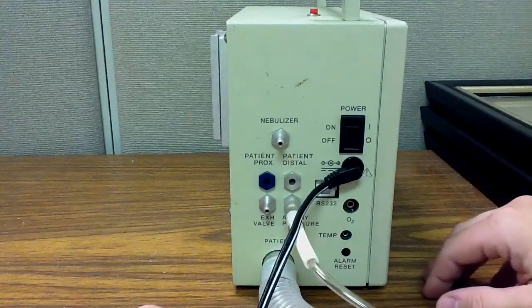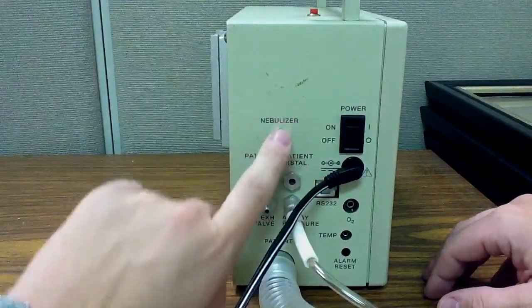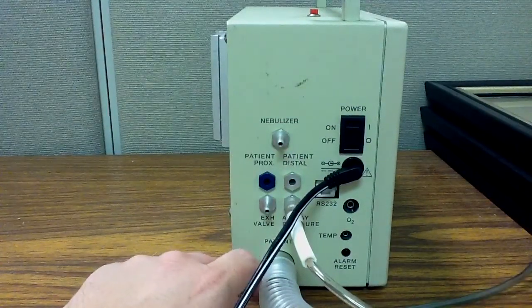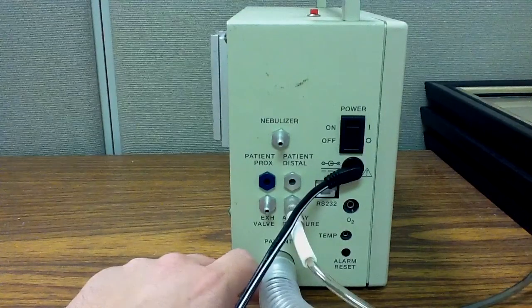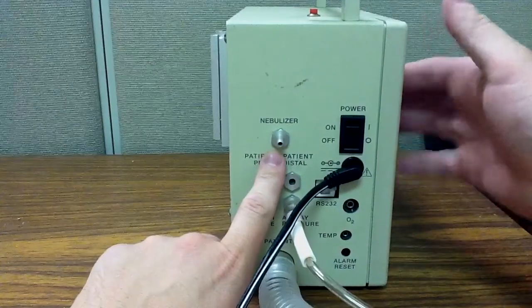Now, if you decide to do a nebulizer, if you need to give beta agonist to your patient, you can attach nebulizer tubing here. You can place your nebulizer in line in the ventilator circuit itself, preferably proximal to the patient. And I'll show you the nebulizer option in the ventilator.